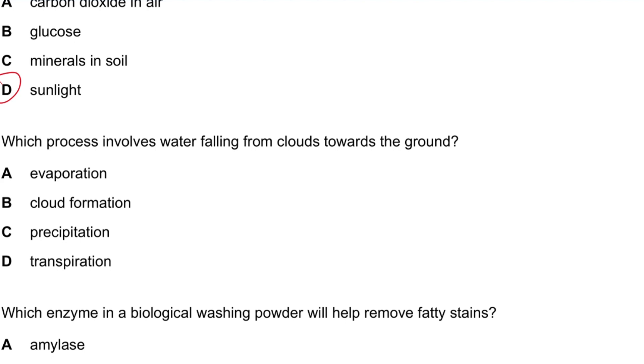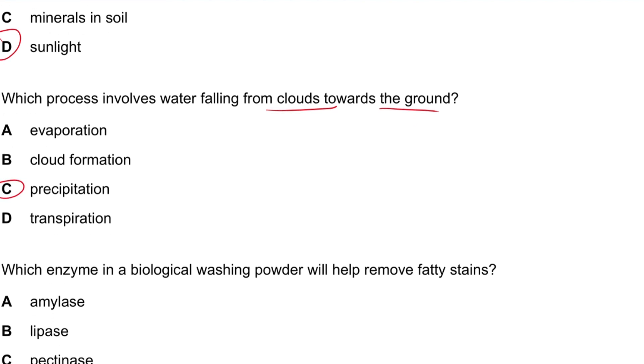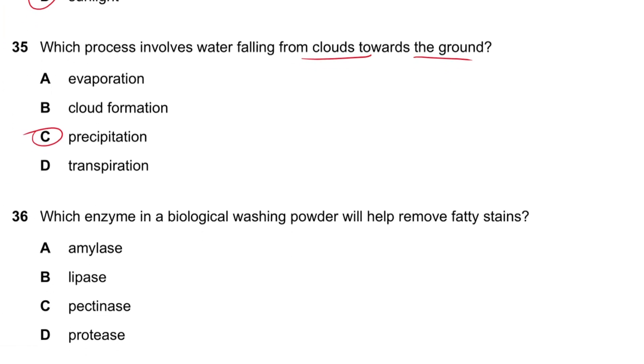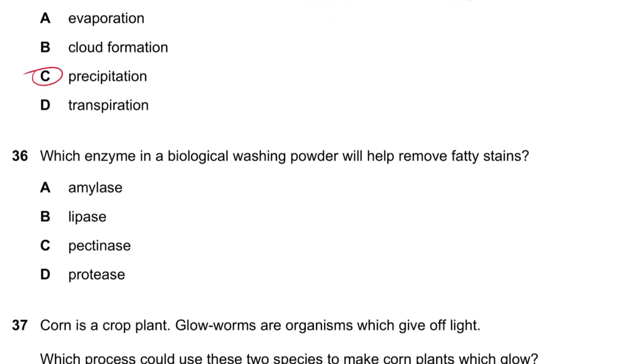Question 35: Which process involves water falling from clouds towards the ground? That is precipitation — rain falling from clouds.